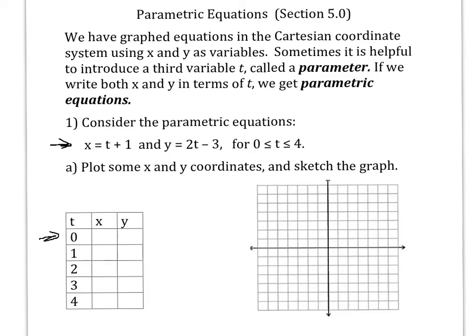You can generate some x and y coordinates by picking values of t. If t is zero, x is one, y is negative three. If t is one, x is two, y is negative one, and so on. So we get these points and then we could plot these points. Let's see, 1 negative 3, 2 negative 1, 3 1, 4 3, 5 5.